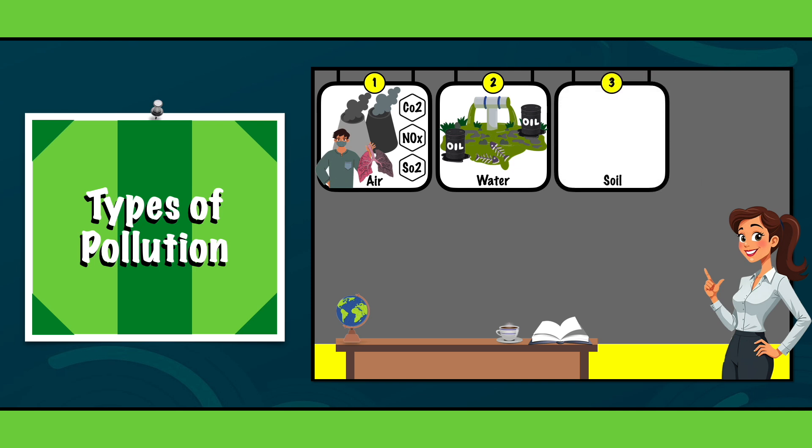3. Soil pollution. Soil pollution is a growing problem, particularly in agricultural and industrial areas, where toxic chemicals like pesticides and industrial waste seep into the ground. This degradation of soil affects plant health, reduces crop yields, harms wildlife and can even contaminate the food we consume.